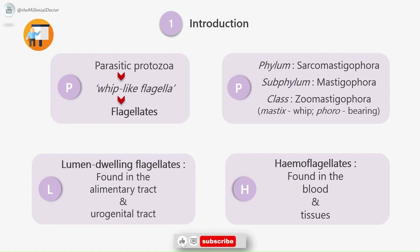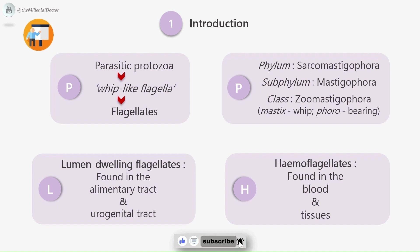Depending on their habitat, they can be considered under lumen-dwelling flagellates found in the alimentary tract and urogenital tract, and hemoflagellates, which are flagellates found in blood and tissues. Most luminal flagellates are non-pathogenic. Two of them cause clinical diseases: the first being Giardia lamblia, which can cause diarrhea, and the second is Trichomonas vaginalis, which can produce vaginitis and urethritis.